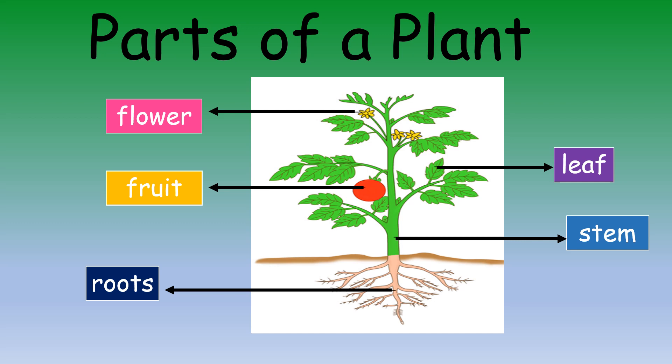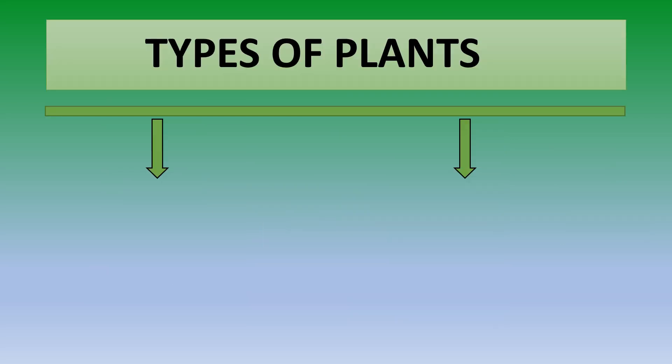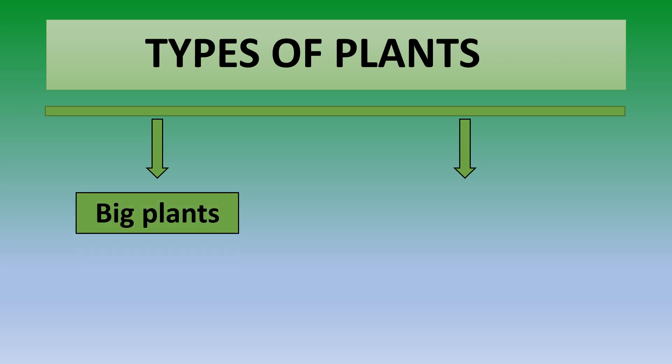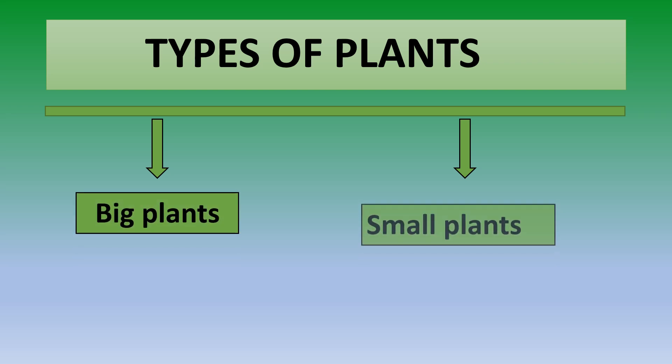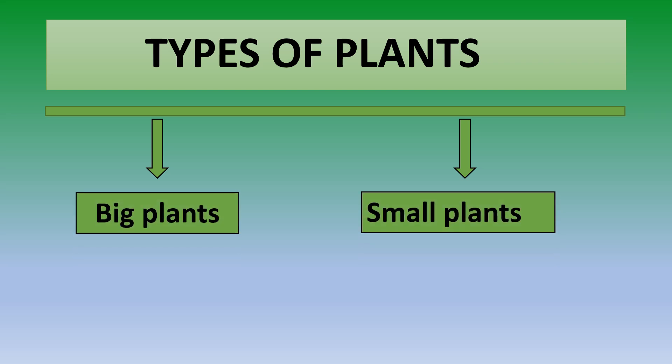Now let's learn about the different types of plants. There are two types of plants — big plants and small plants. So let's learn about them in detail.